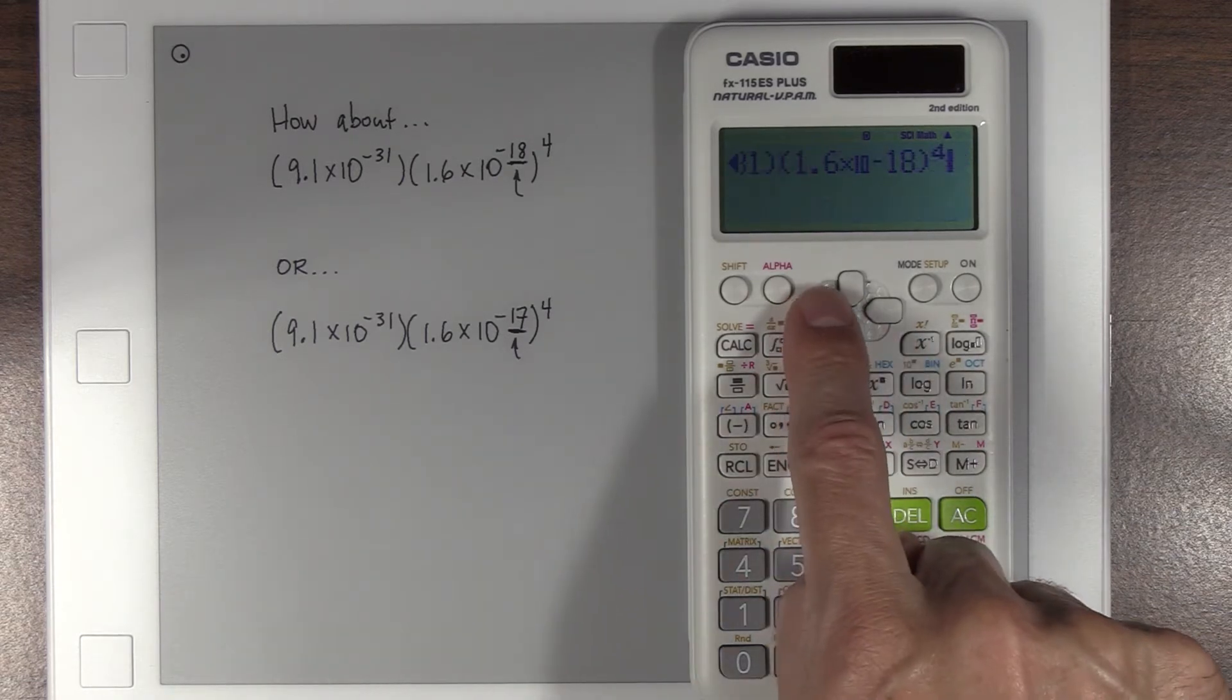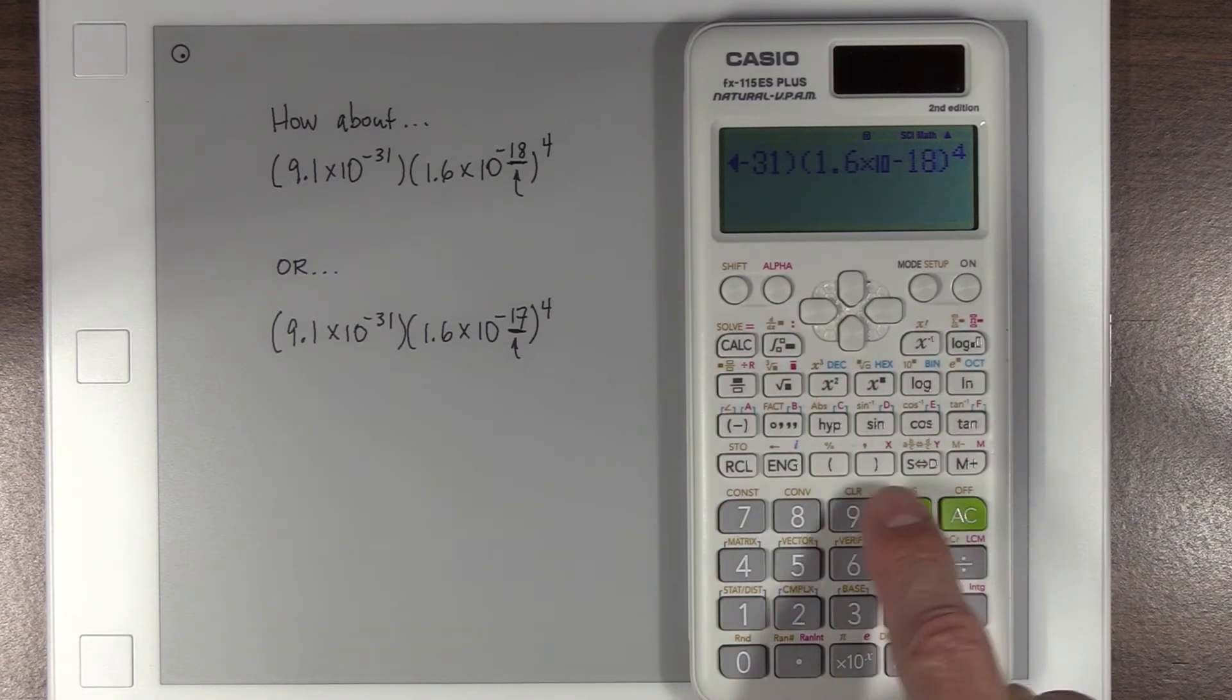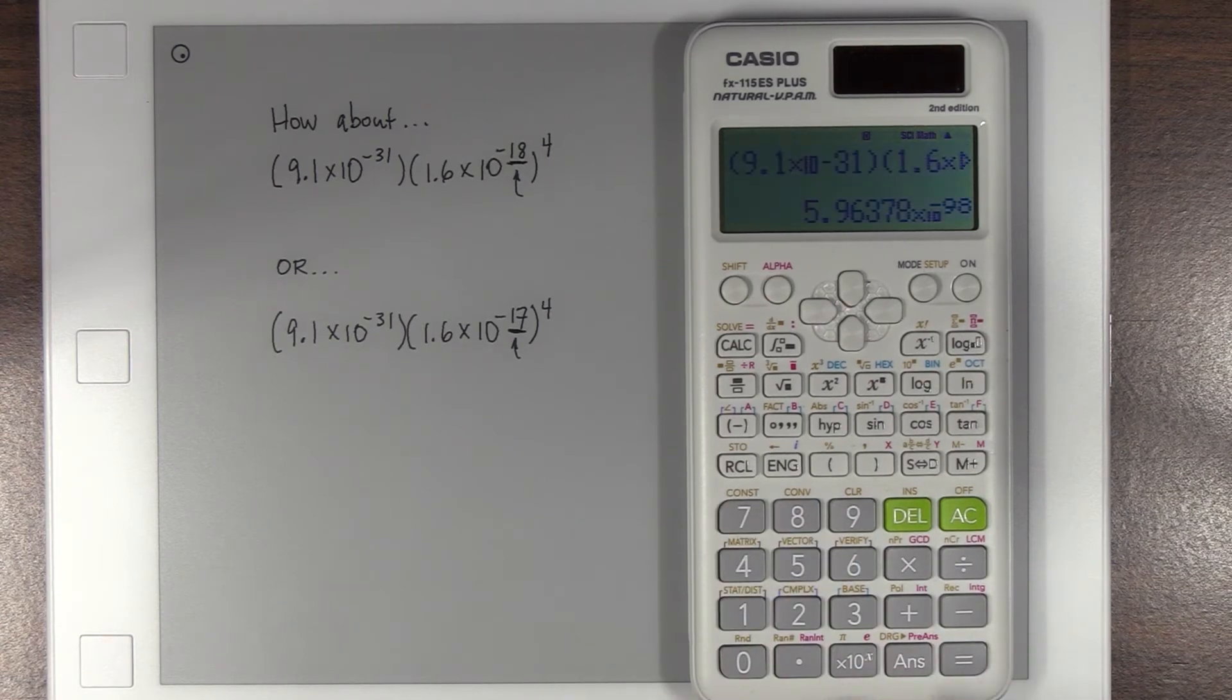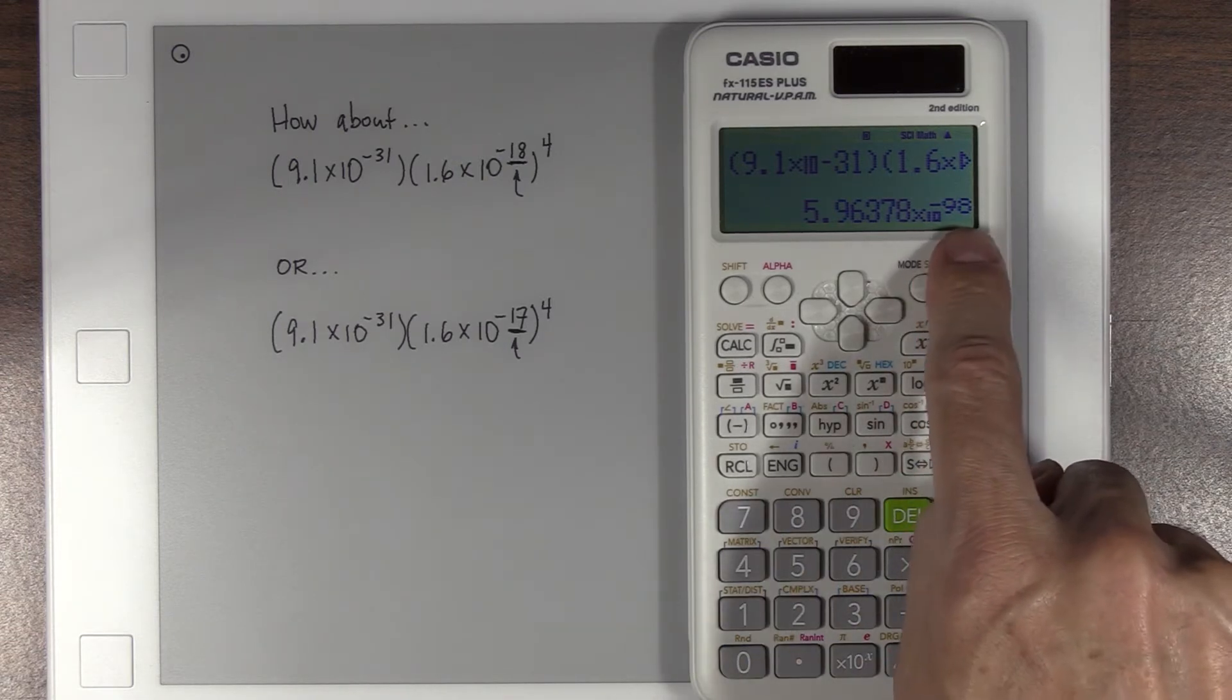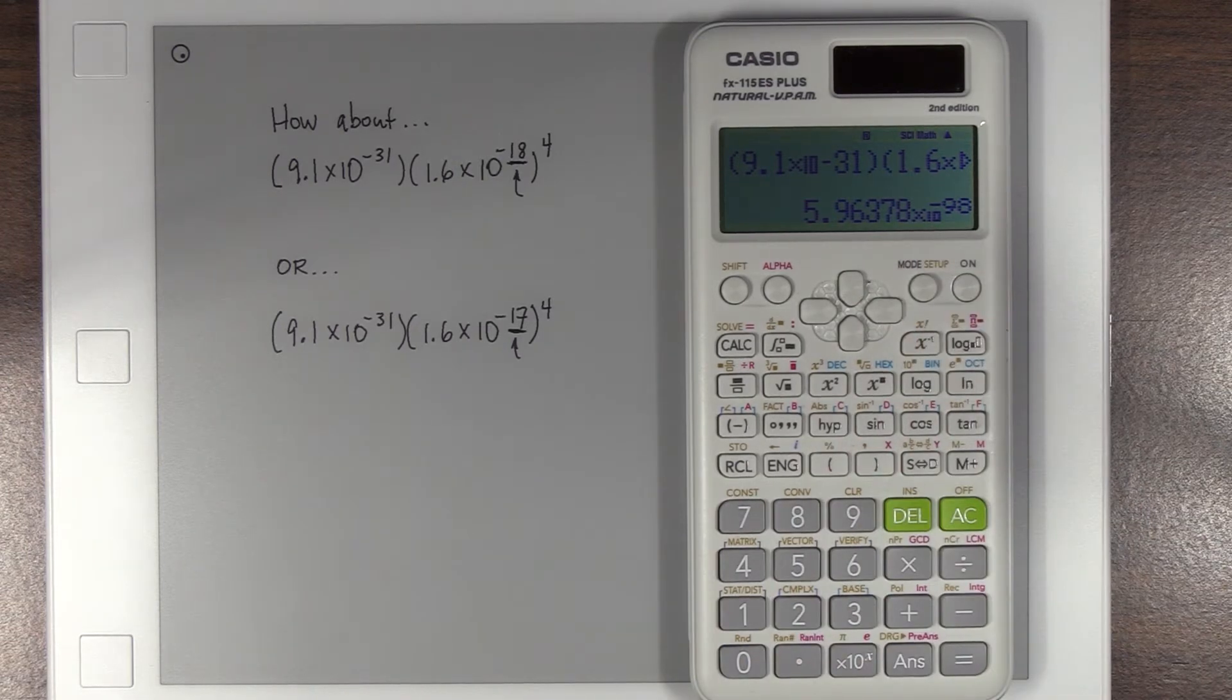What if instead of times 10 to the negative 19 for that last number, let's do times 10 to the negative 18. Just slightly simpler here. I'm just poking around trying ideas here. And no, I still get zero. All right, well, let's try times 10 to the negative 17. And then all of a sudden it worked. And I thought, okay, now that's interesting.